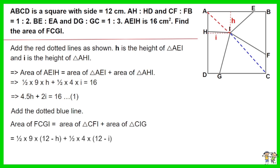Area of triangle CFI equals half times 9 times the result of 12 minus H. Area of triangle CIG equals half times 4 times the result of 12 minus I.